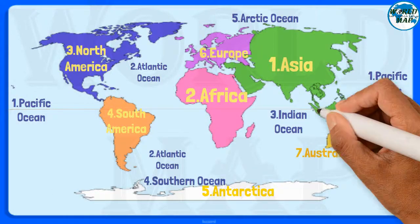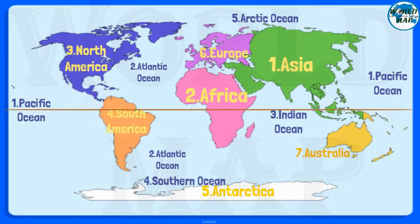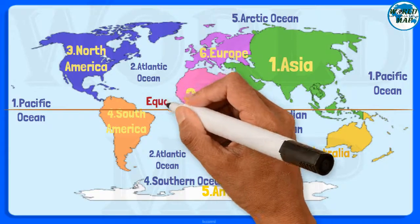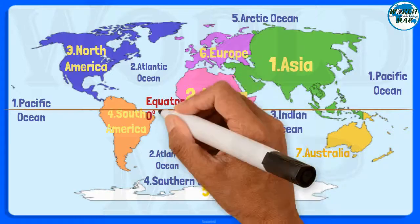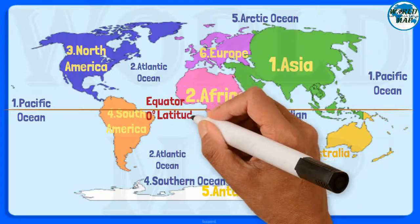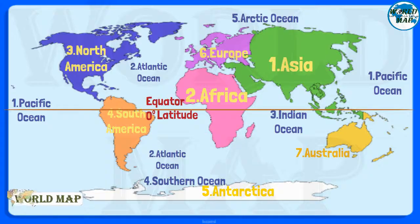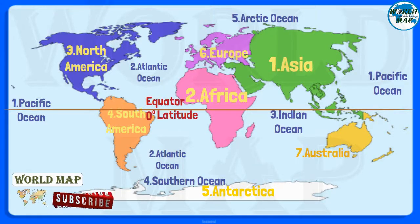The equator is a circle of latitude that divides a spheroid, such as Earth, into the northern and southern hemispheres. On Earth, the equator is an imaginary line located at zero degrees latitude, about 40,075 kilometers in circumference, halfway between the north and south poles.